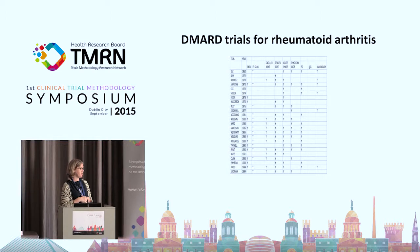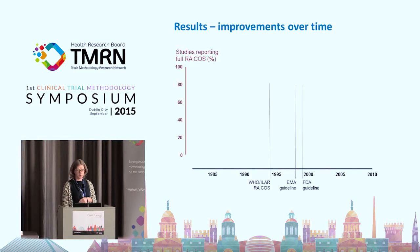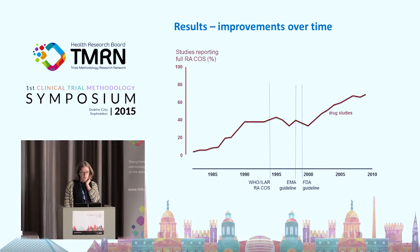One of the most well-known core outcome sets was developed by the OMARAT group for treatments of patients with rheumatoid arthritis. The core outcome set — agreed between the World Health Organization and the International League Against Rheumatology — was published in 1994 and includes seven outcomes. Plotting time on the x-axis with a vertical line at 1994, the y-axis shows the percentage of trials fully reporting all seven outcomes in the core outcome set.